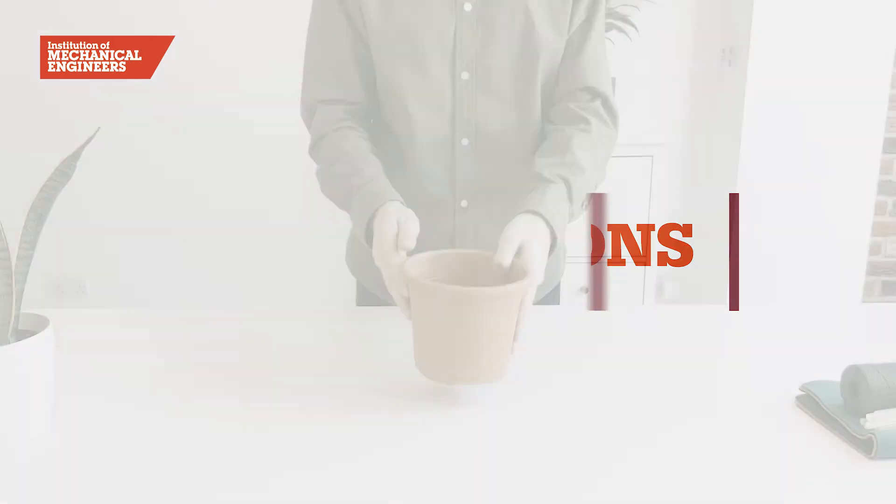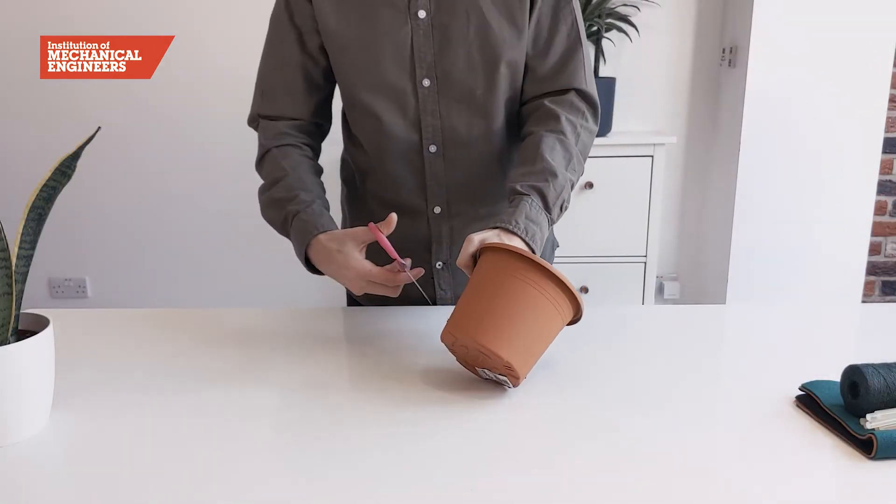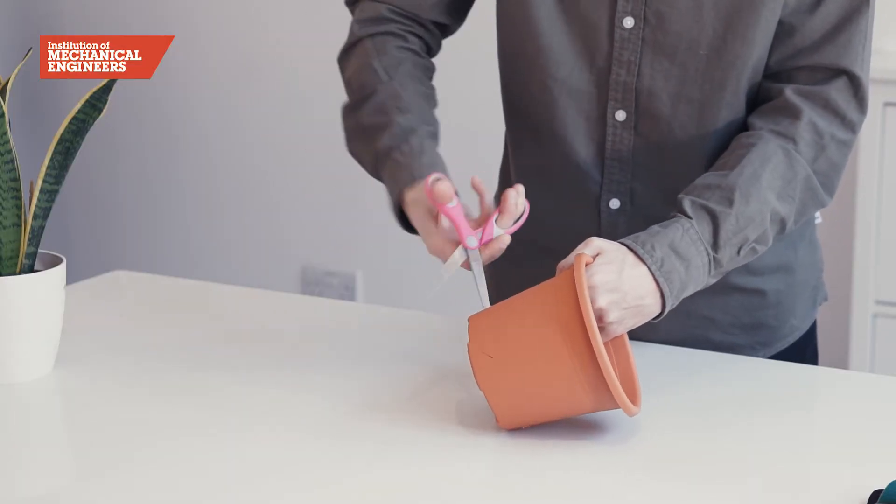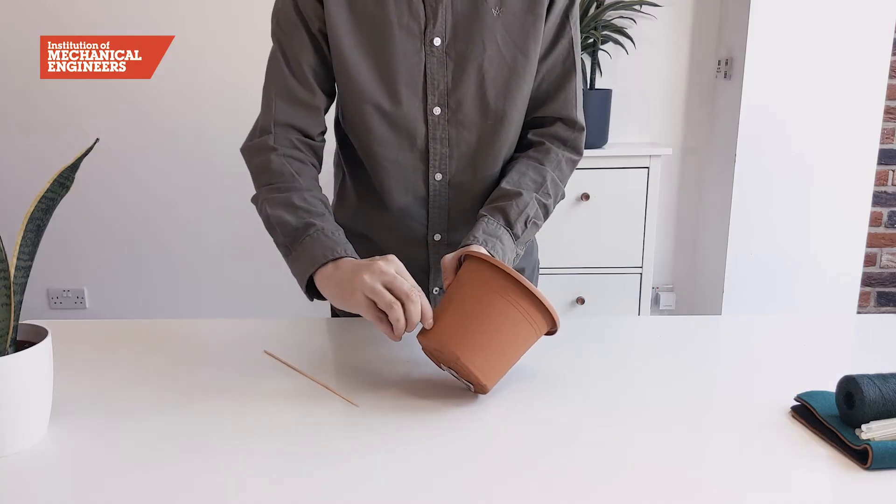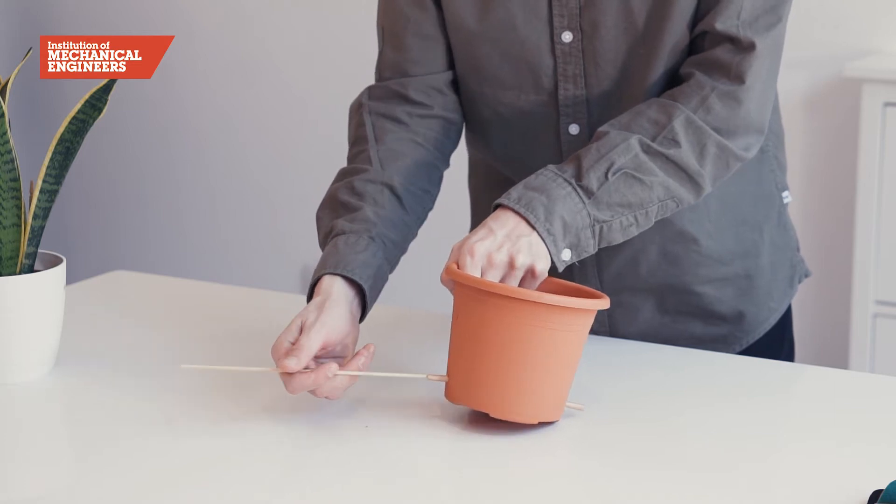We will begin by building the winch system for your mechanical flower. Using a sharp skewer, make a hole in either side of the flower pot. You may need to ask an adult for help with this. Once the holes are large enough, push a short length of straw through each one and thread the kebab stick through the pot to form the spool of the winch system.